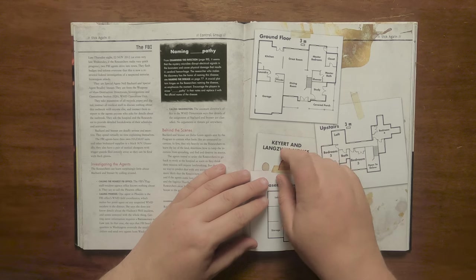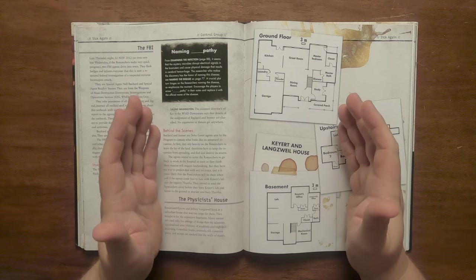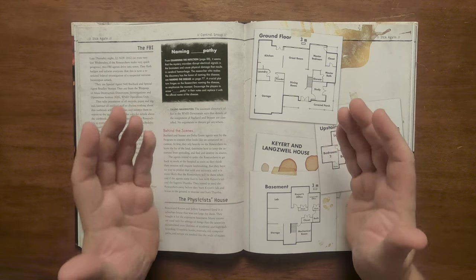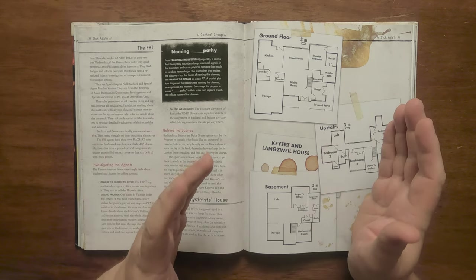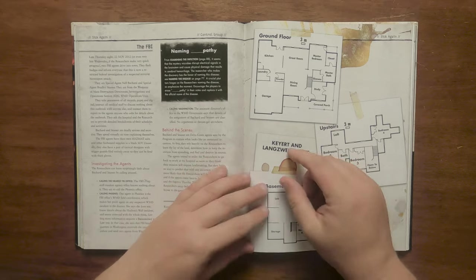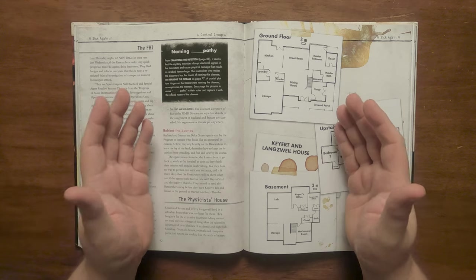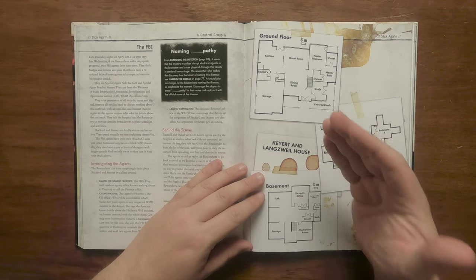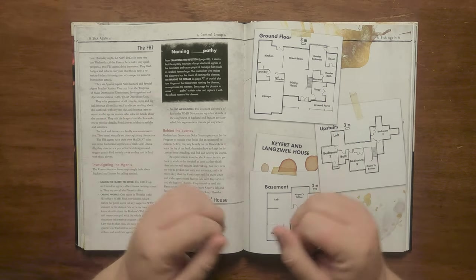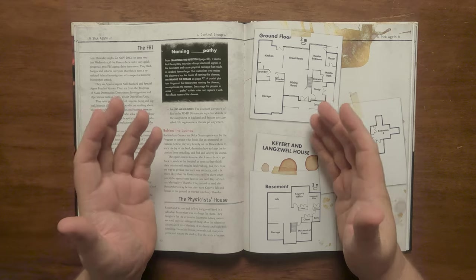If the researchers decide to investigate Bouchard and Stusser, they can get some odd results. Should they call the FBI in Flagstaff, they know nothing of them and advise them to call Phoenix. If Phoenix is called and they speak to the WMD field coordinator, she will be more annoyed that she has no details of the Hudson's well incident. If the right roles are made, she can inform them that the FBI headquarters in Washington overrode the normal command chain and sent two agents. If Washington is contacted, then the researchers will be stonewalled and told it's classified. What has actually happened is that Bouchard and Stusser are Delta Green agents, sent by the program to contain a suspected unnatural incursion. They will initially rely on the researchers to get a handle on the event and then set about a plan to destroy the incursion and stop it spreading.